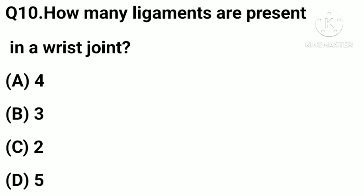How many ligaments are present in a wrist joint? Option A, 4; B, 3; C, 2; D, 5.